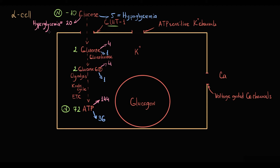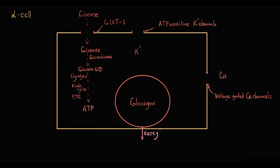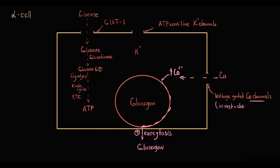The overall concept of glucagon secretion is that glucagon is secreted by exocytosis. To trigger exocytosis, the cell requires a high intracellular calcium level. To create high intracellular calcium level, voltage-gated calcium channels have to open. In the resting state, they are closed. Because calcium channels are voltage-gated, they are opened by cellular depolarization.